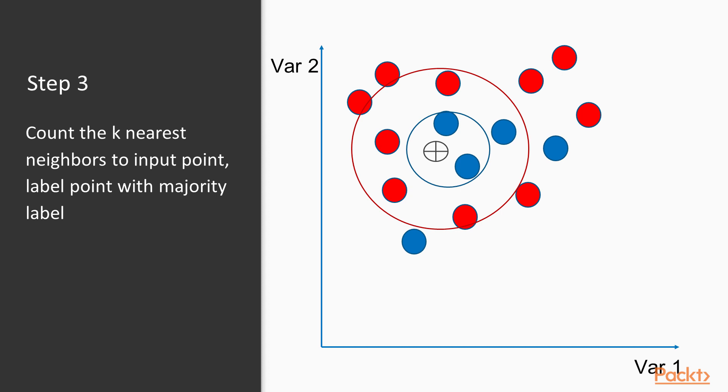Whereas if we set k to 7, using the 7 nearest neighbors, the point would actually be labeled red because the majority of its neighbors are red.